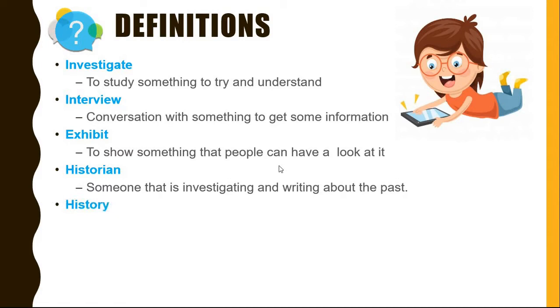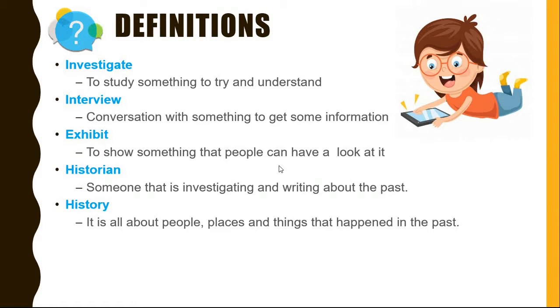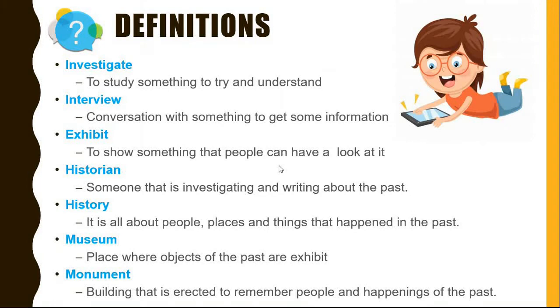History is all about people, places and things that happened in the past. A museum is a place where objects of the past are exhibited. A monument is a building that is erected to remind people of happenings in the past.